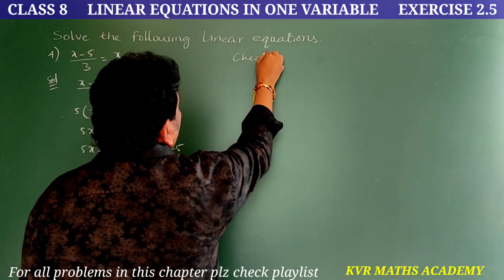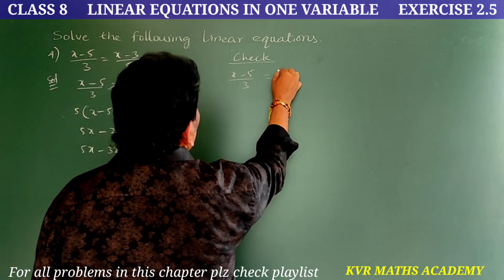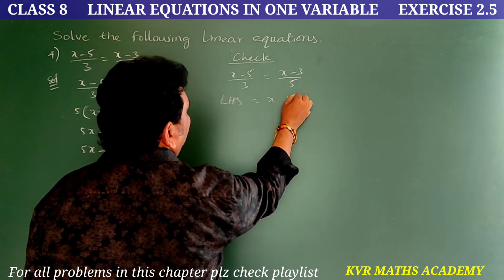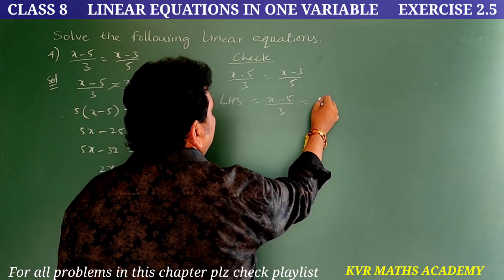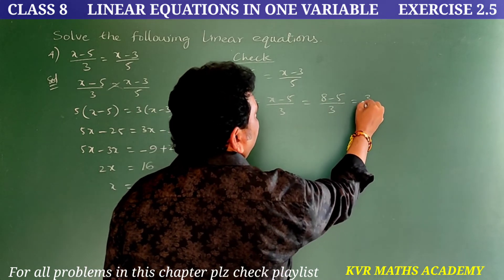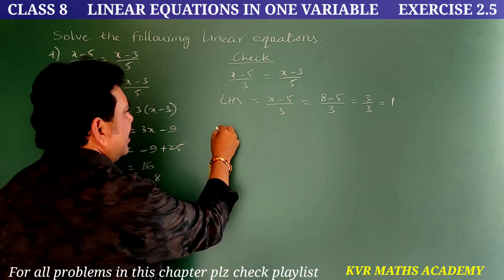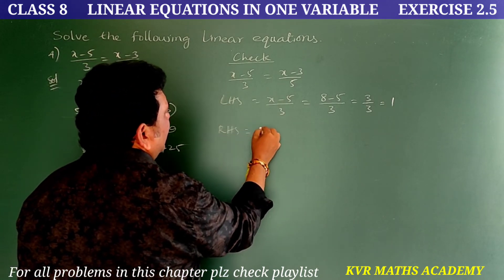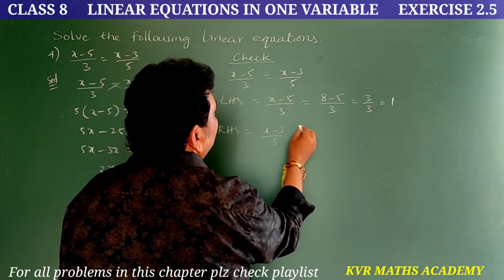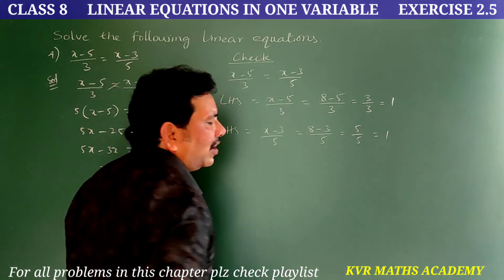Check — given equation: (x-5)/3 = (x-3)/5. Take LHS, substituting x = 8: (8-5)/3 = 3/3 = 1. RHS: (8-3)/5 = 5/5 = 1.